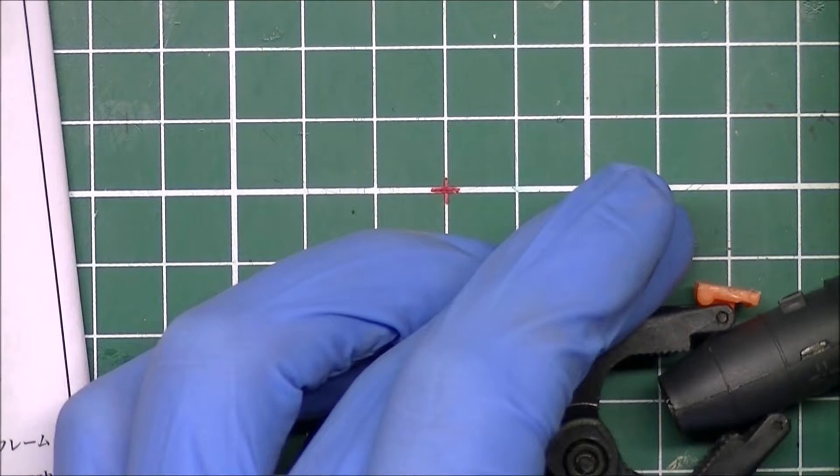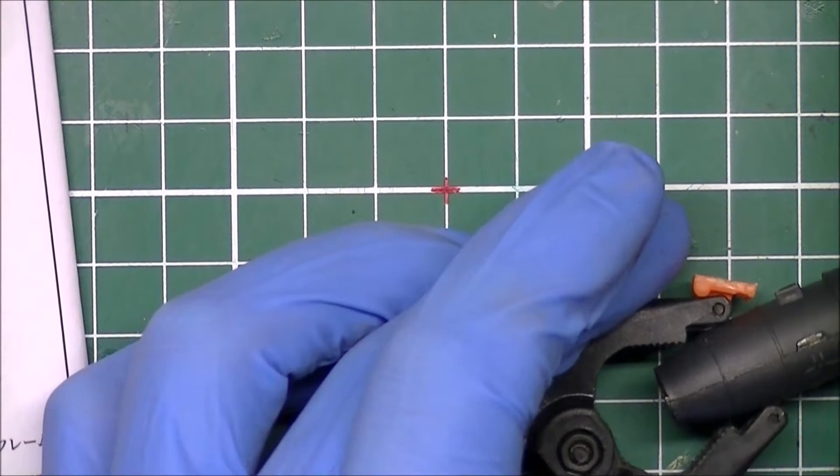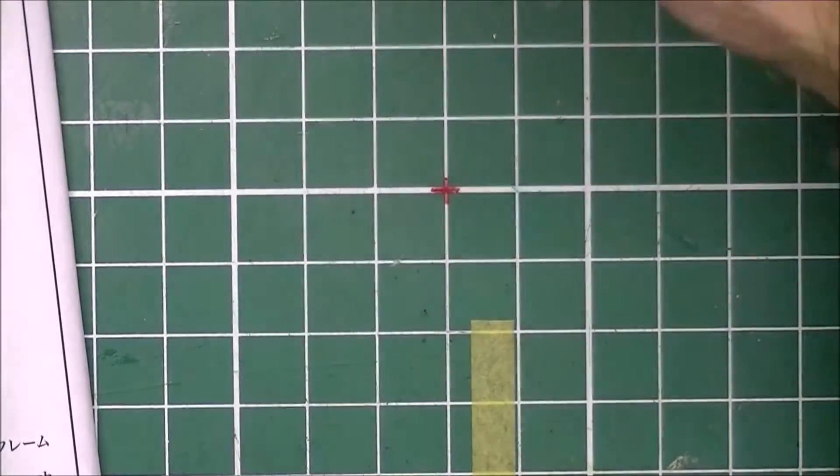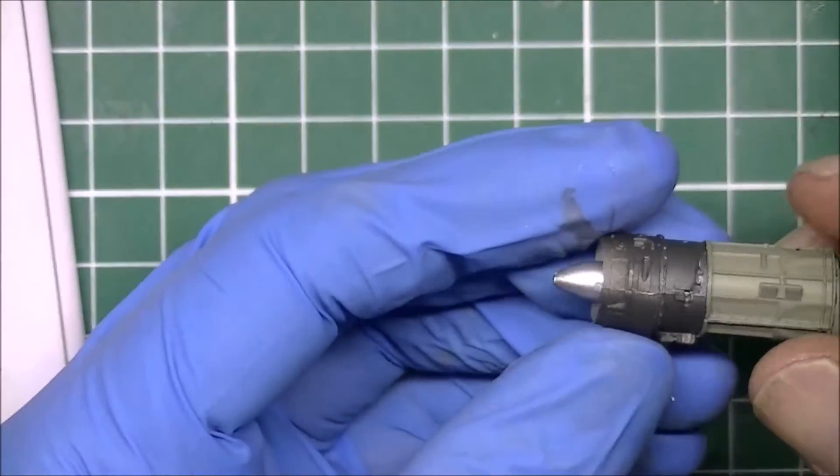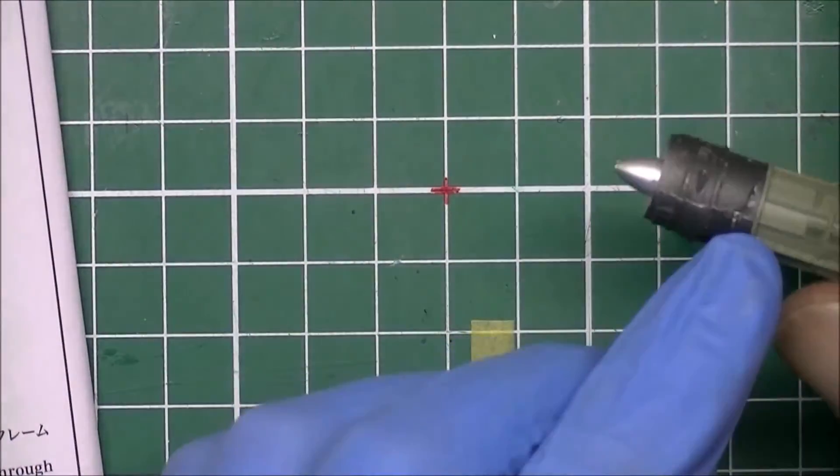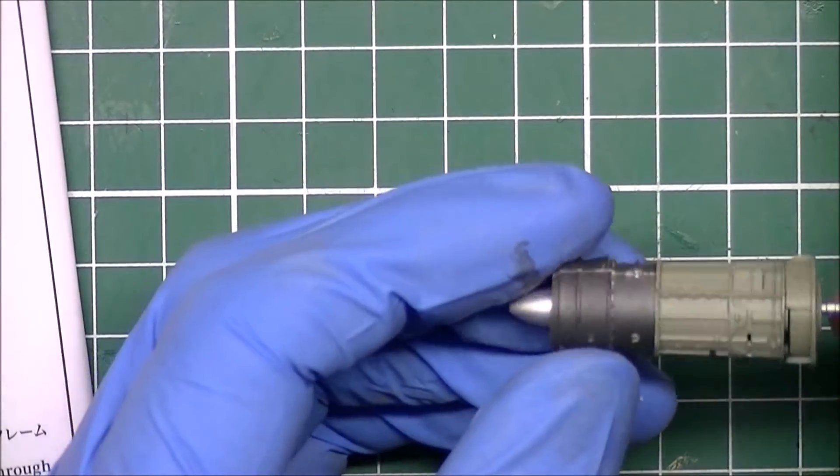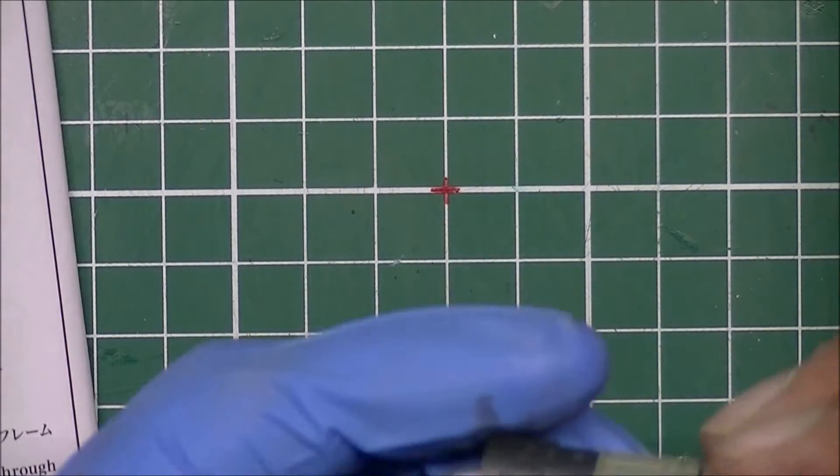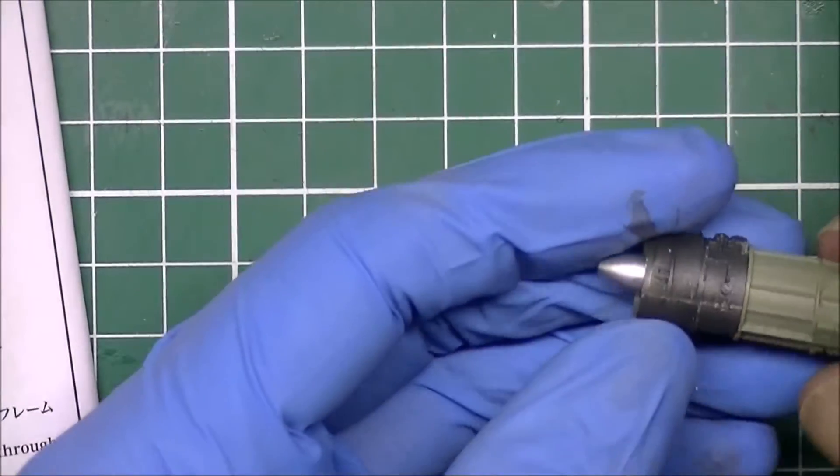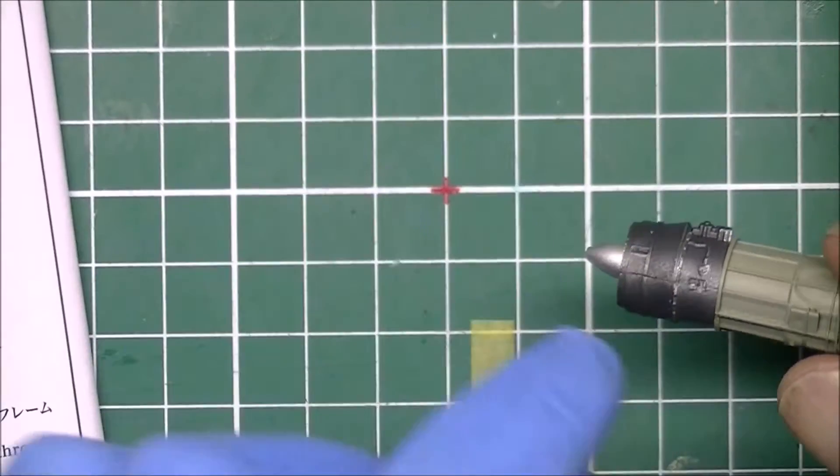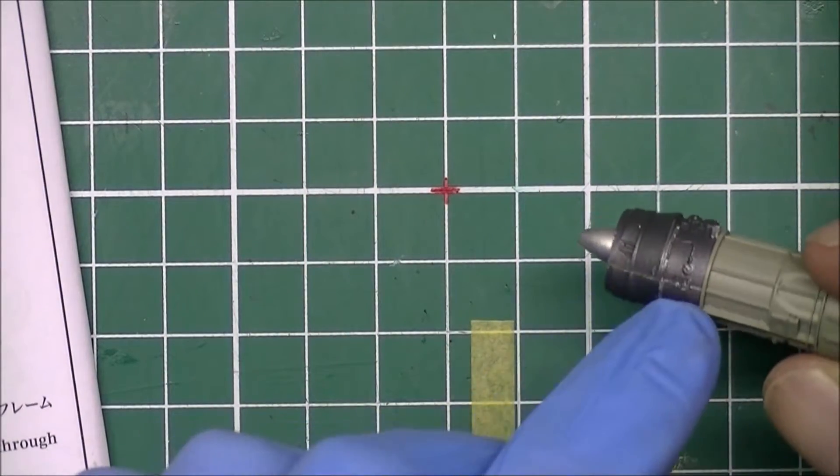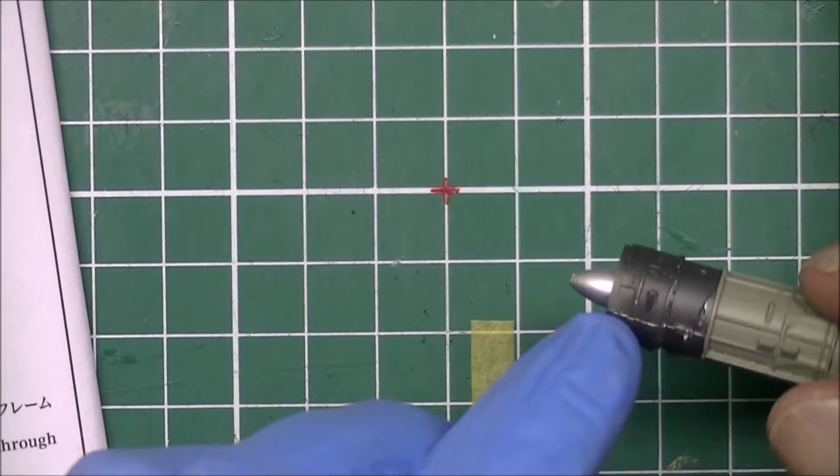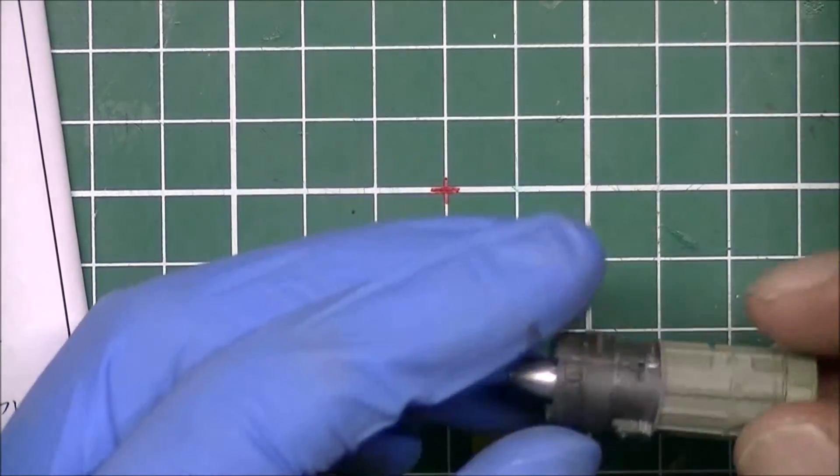I'm gonna fill it and sand it out so the seam line will be gone. I don't think you'll see much of the engine eventually but it just annoys me. There's also a seam on the other part but I think we can get away with that one. This will be way too difficult to fix because of all the wires that are molded in here.